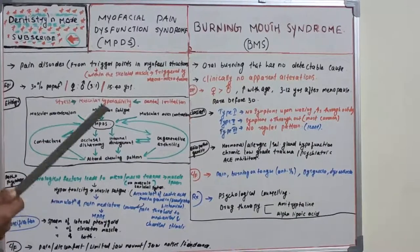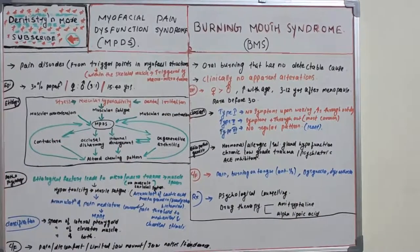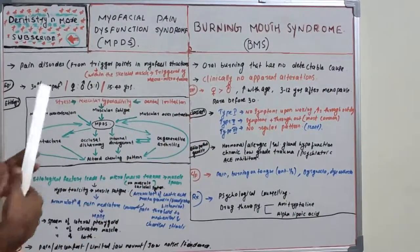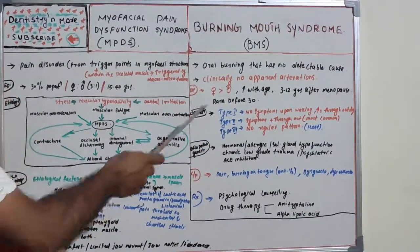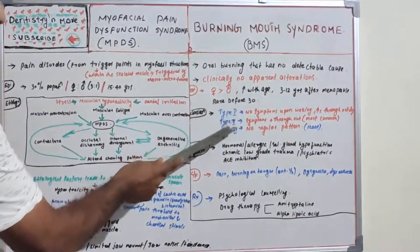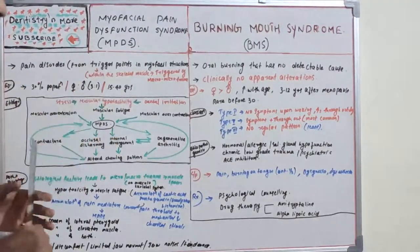Burning mouth syndrome increases with age and is commonly seen in women 3–12 years after menopause. It is very rare before age 30. Classification is into three types based on symptoms upon waking: Type 1 — no symptom upon waking, increases throughout the day; Type 2 — symptoms present upon waking and throughout the day (most common type); Type 3 — no regular pattern (least common).